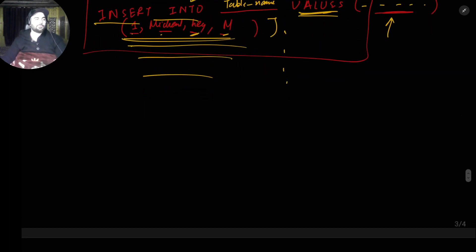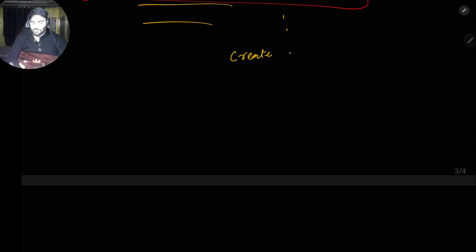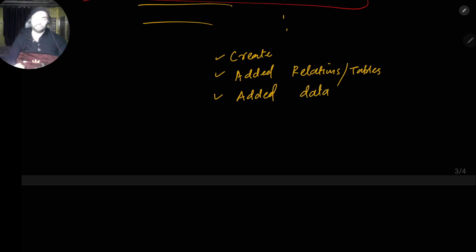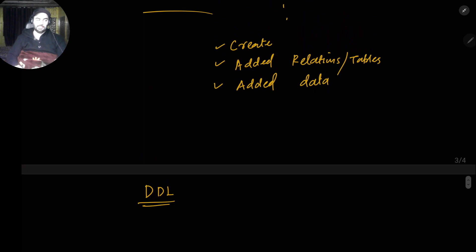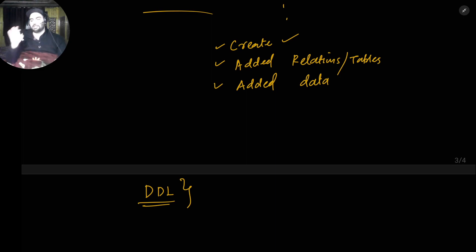To summarize what we've done so far: we created a database, we added tables (relations in a relational database), and we inserted data. This all comes under Data Definition Language — DDL. We used CREATE, DROP, and we'll later use UPDATE. Whatever we defined — database creation, using it, making tables, inserting data — is all the creation phase of the database. Is it clear?